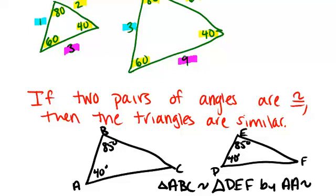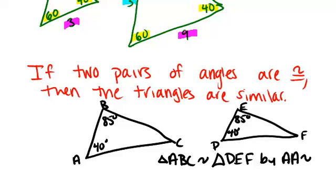Now AA stands for angle angle, and that's how it works, that you look for two pairs of angles being congruent.